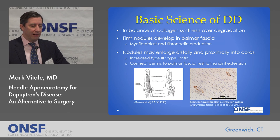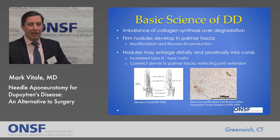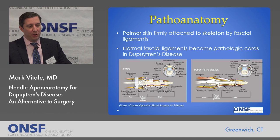These nodules may enlarge distally and proximally into cord-like structures. When you look at these cords, there's an increase in the ratio of type 3 to type 1 collagen, and that's important for one of the potential treatments called collagenase or Xiaflex. These connective cords connect the skin to the palm or fascia and can restrict finger joint extension.